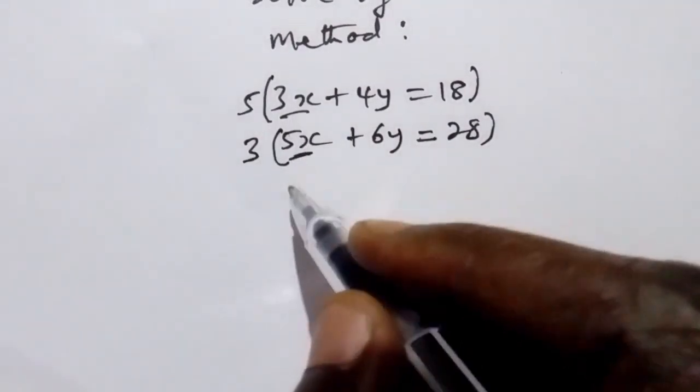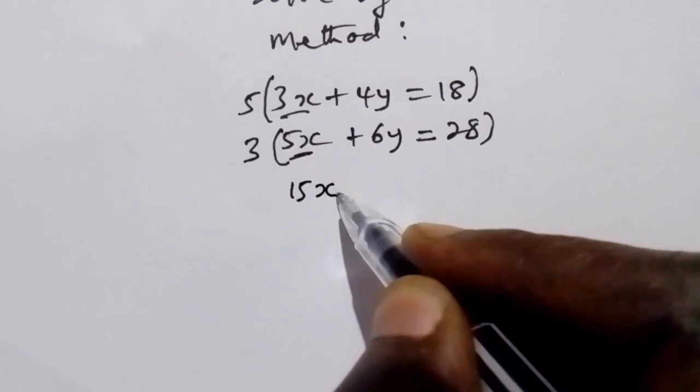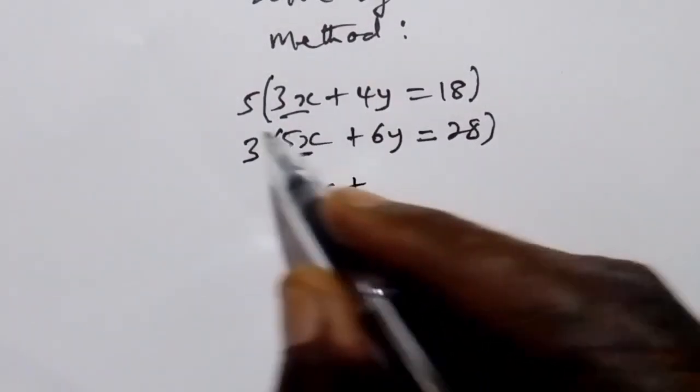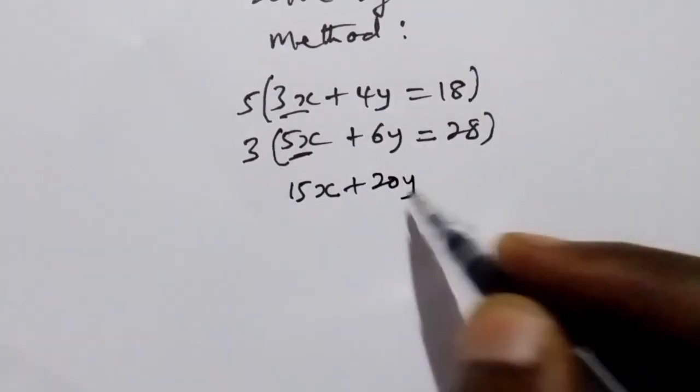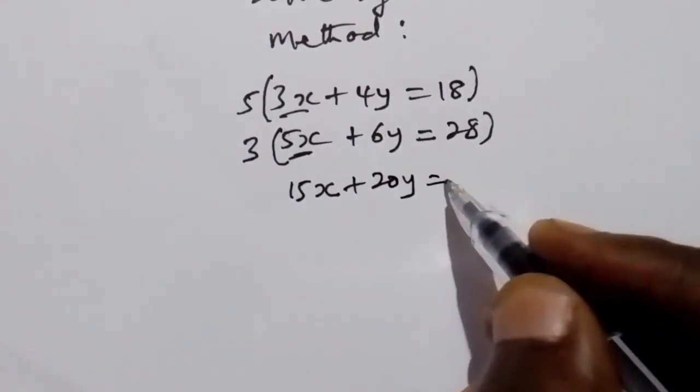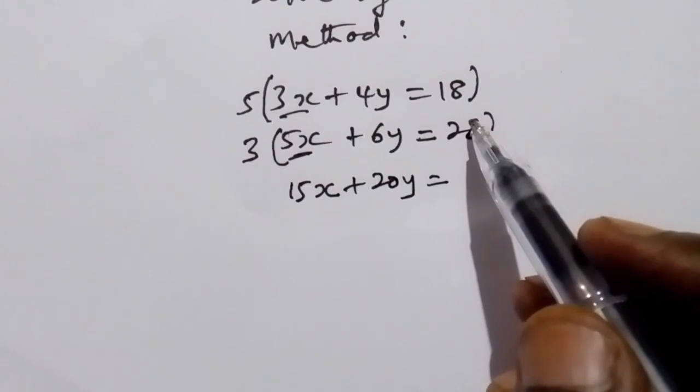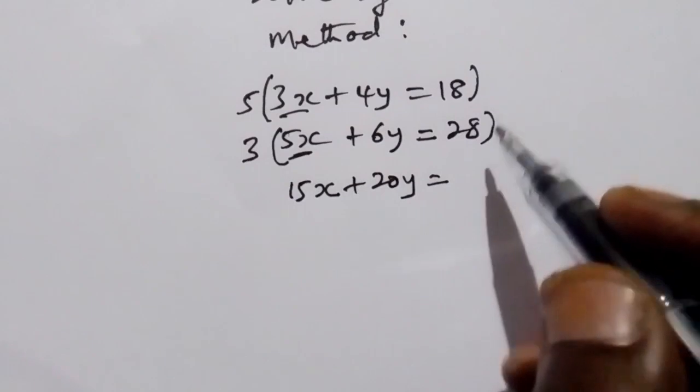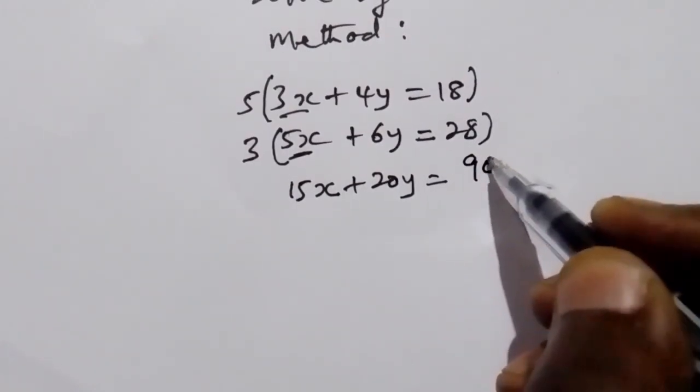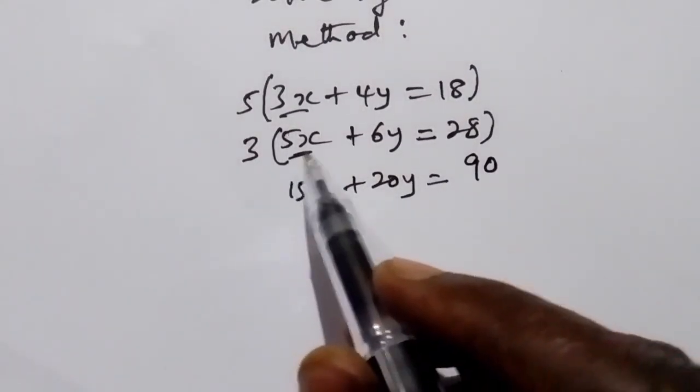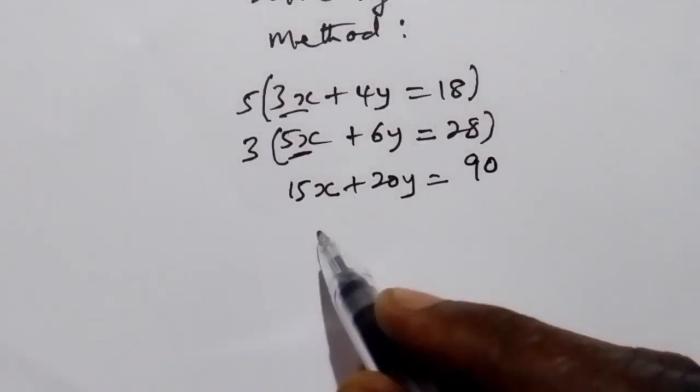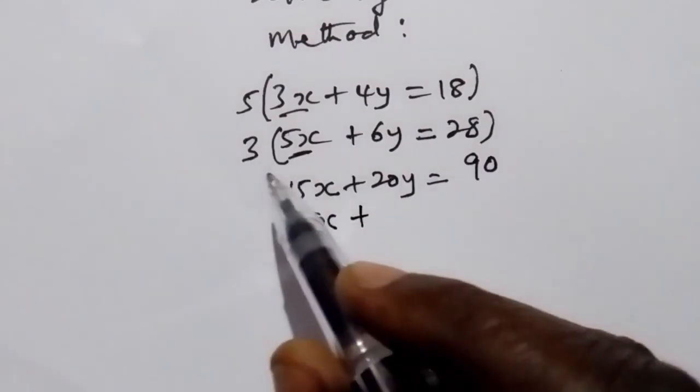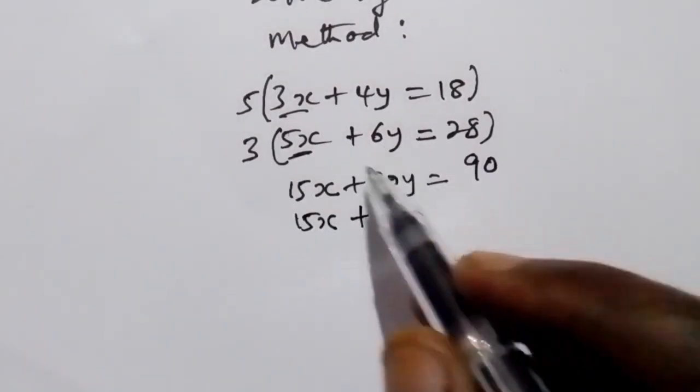5 by 3x, that is 15x. 5 by 4y is 20y. 5 by 18 is 90. 3 by 5x is 15x plus 3 by 6y is...